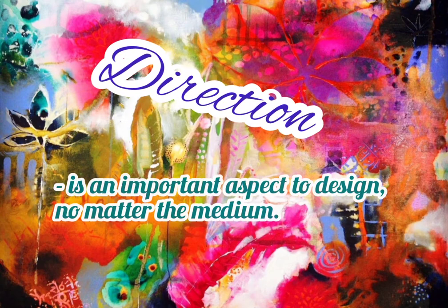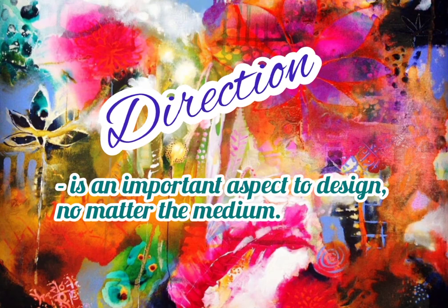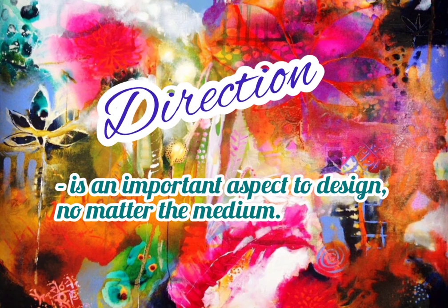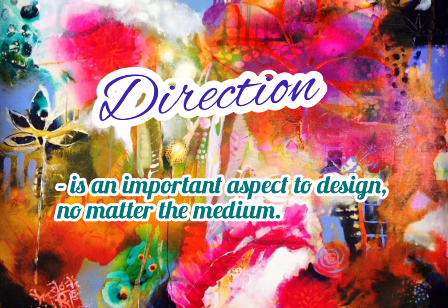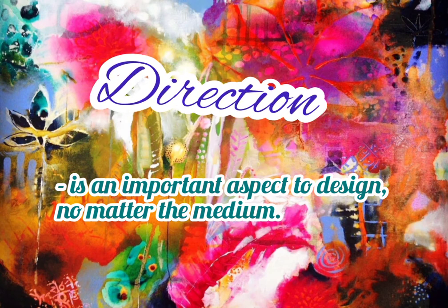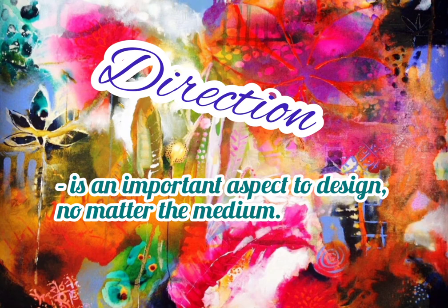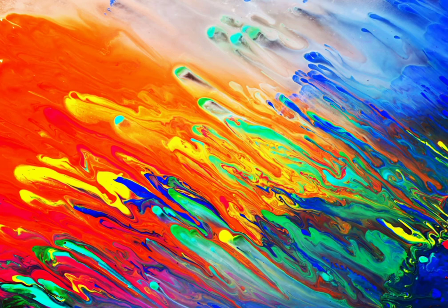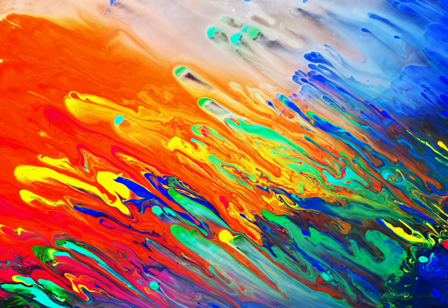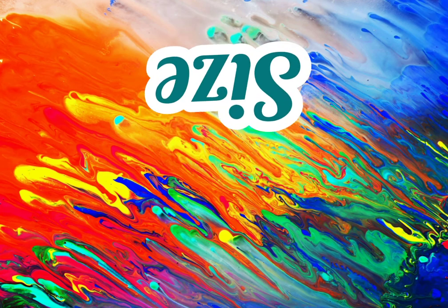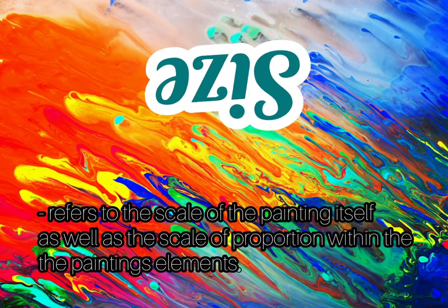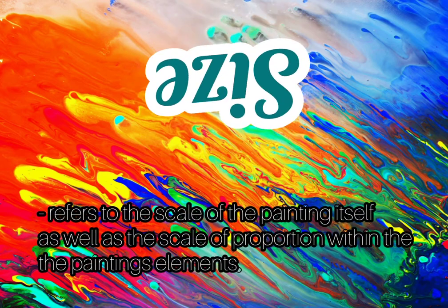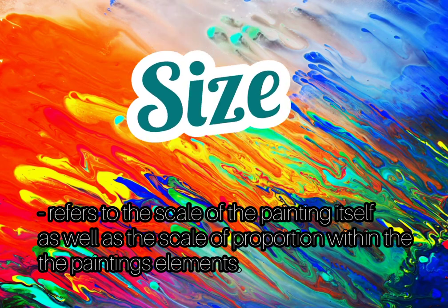The eighth element is direction. Direction is an important aspect of design, no matter the medium. All of the painting's elements must have light falling on them from the same direction, or viewers will be confused. The ninth and last element of painting is size. Size refers to the scale of the painting itself as well as the scale and proportion within the painting's elements.